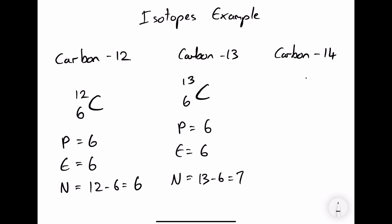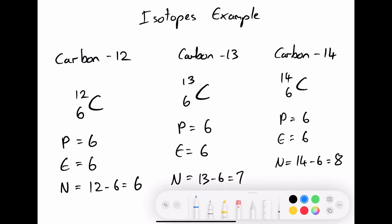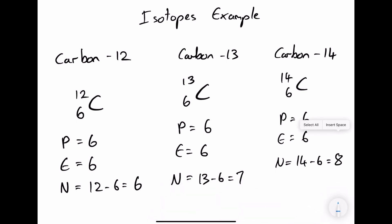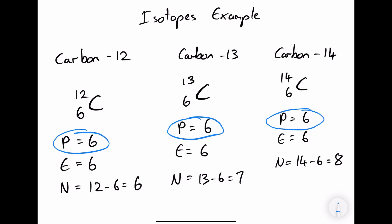Carbon-14 also has an atomic number of 6 and a mass number of 14. So it has 6 protons, 6 electrons, and 14 minus 6 gives 8 neutrons. As you can see, they are isotopes because they have the same number of protons — which gives them the identity of being carbon — but they have a different number of neutrons.